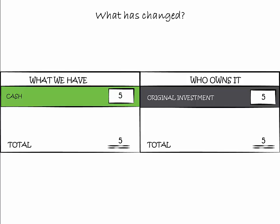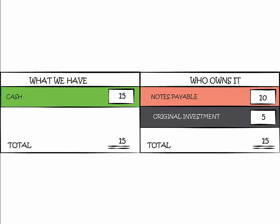You can pause the lecture if you would like to try to answer this yourself first. The $10 is yours to use, so we can add it under cash. But you don't own it — you owe it to mom. Therefore, we need to create a new category on the right side of the scorecard. We now have a total of $15 in cash. Of that $15, $5 belongs to us and $10 is a loan from mom. We'll call that notes payable.